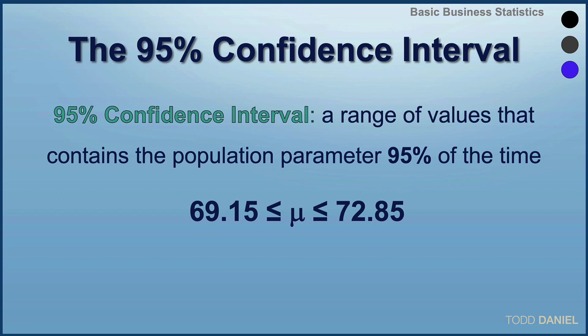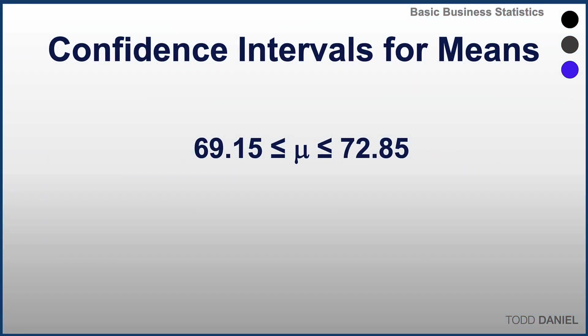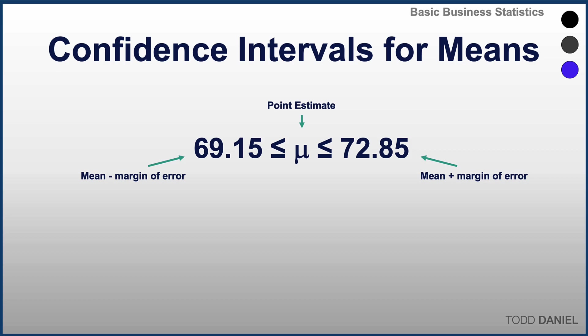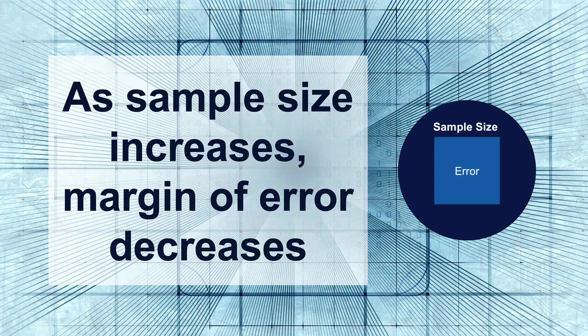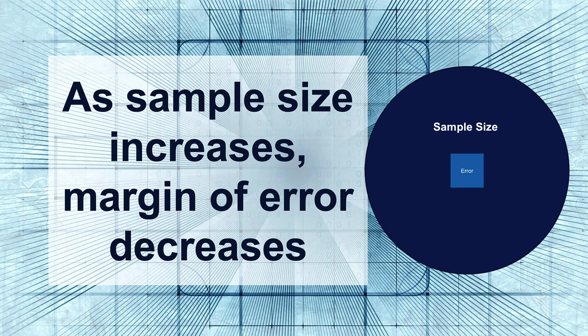As we look at a confidence interval, we will see the lower limit of the range. We will see the upper limit of the range, and right in the middle is the best estimate — the point estimation — for a population mean. We are 95% confident that that population mean lies within that lower and upper limit. Any confidence interval is always the mean plus or minus a margin of error, and that margin of error will increase or decrease based upon whether we've specified 90 versus 95 versus 99%. And as sample size increases, the margin of error will decrease.